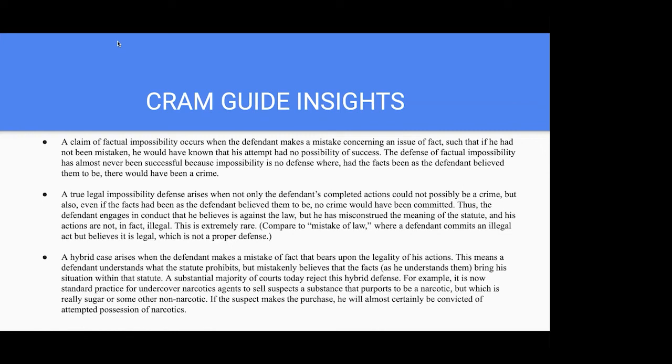Factual impossibility: this occurs when the defendant makes a mistake about a fact such that, had he not been mistaken, he would have known his attempt had no possibility of success. The defense of factual impossibility has almost never been successful, because impossibility is no defense where, had the facts been as the defendant believed them to be, there would have been a crime.